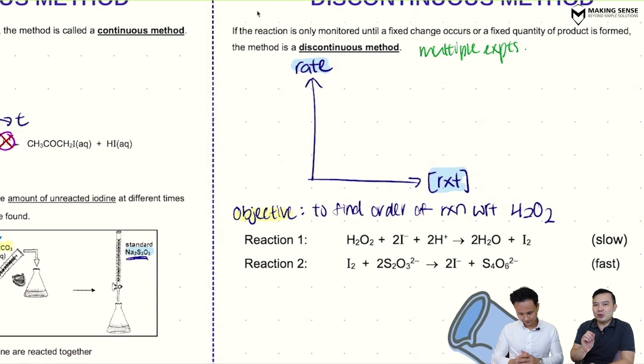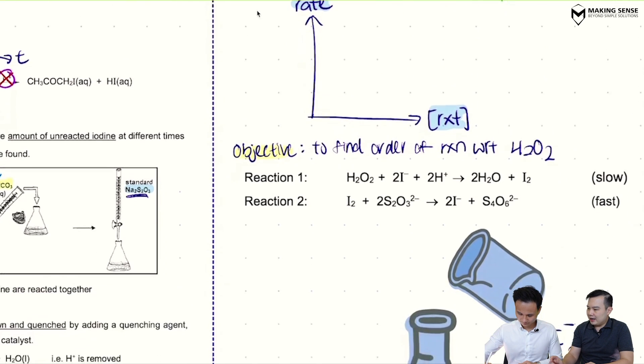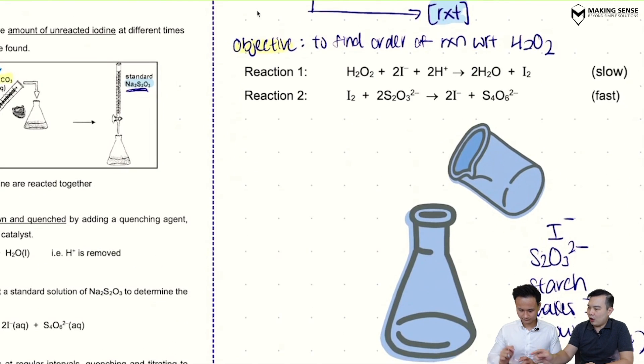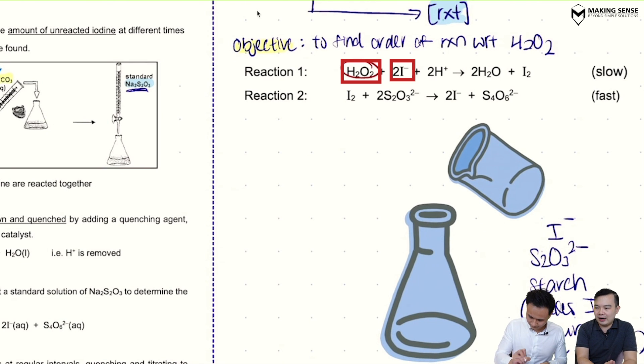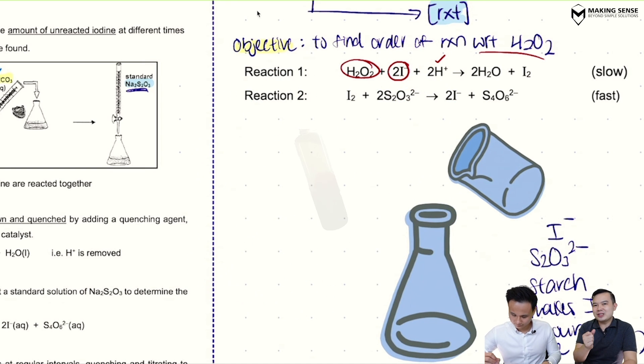So here we're going to see how this is done in experiment. Let's take a look at the particular reaction that I want. In this case I'm looking at H2O2 reacting with iodide in acidic medium, and my objective here is to find out the order of reaction with respect to hydrogen peroxide (H2O2).